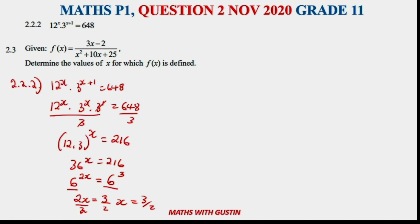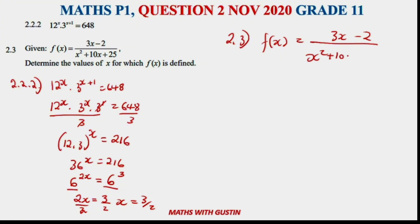Let's move on to question 2.3: consider f(x) equals (3x minus 2) all over (x squared plus 10x plus 25). Determine the values of x for which f(x) is defined.